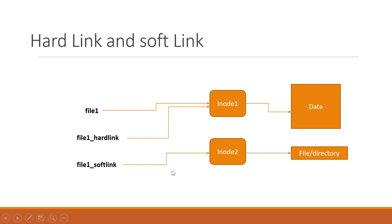Now coming to softlink — when we create a softlink, it will create a new INODE for this softlink. That means it will not be using the same INODE as the original file. This INODE information will contain a pointer to file 1, meaning it will not contain a pointer to the actual data of file 1. Since we have two INODEs here, if I delete file 1, the data will be deleted and this softlink will not be useful at all because it is pointing to file 1 instead of the data.